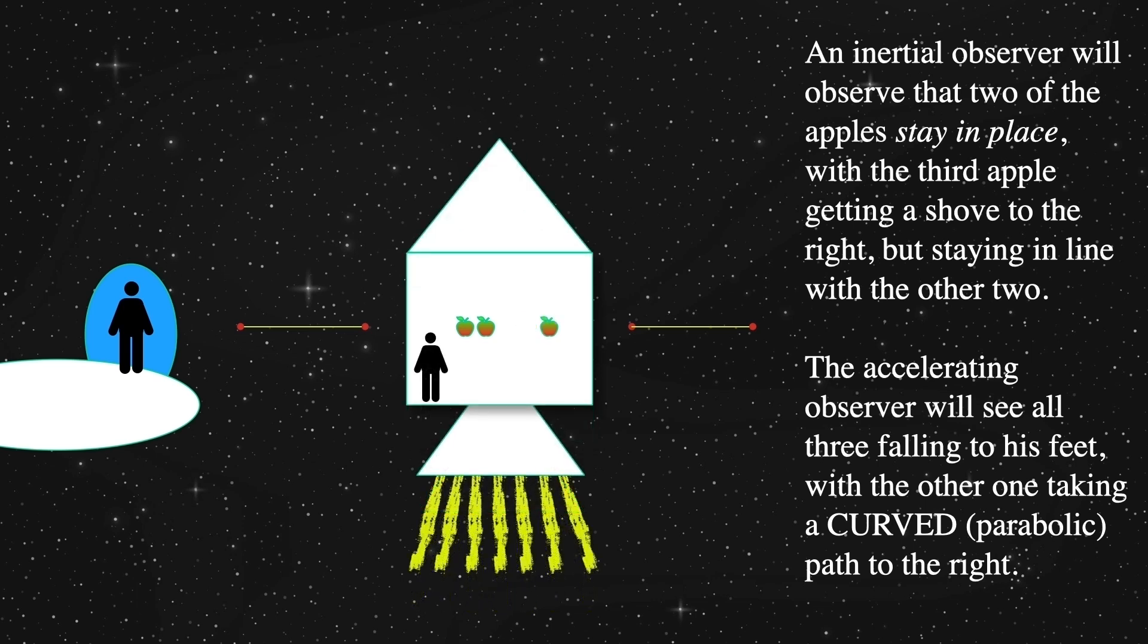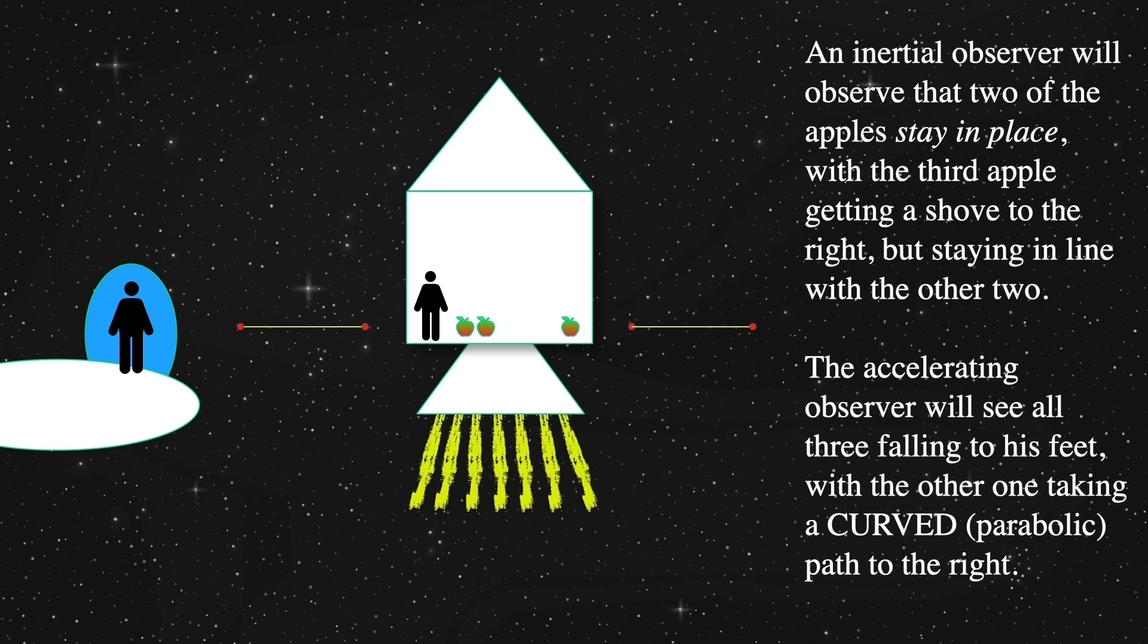Both see the rightmost apple drift further rightward. The rocket accelerates and picks up speed. Stewart still sees a straight line, but Elton sees them falling faster. Lastly, they hit the floor because the rocket has accelerated up to meet them. Stewart last saw them just before they splattered on impact as still in a straight line, which is what he saw the entire time.